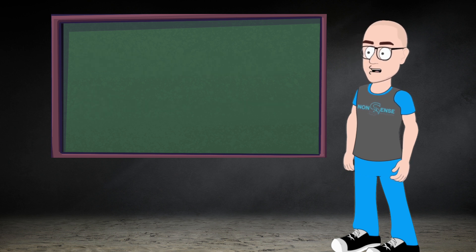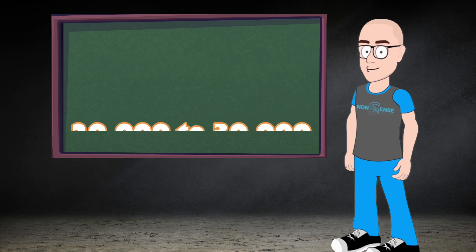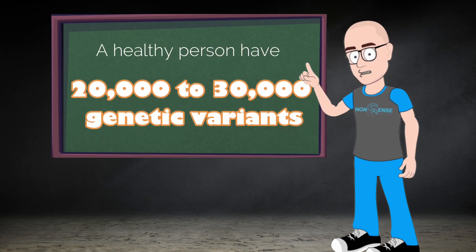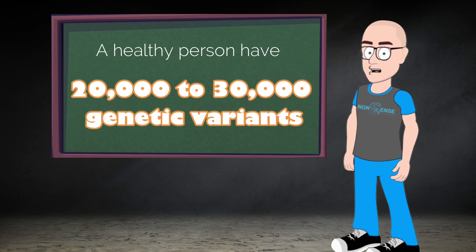Note that it is very common to find such variants. A healthy person will usually have up to 20,000 to 30,000 genetic variants. Most are harmless variants and thus are not reported.